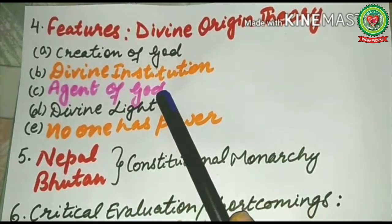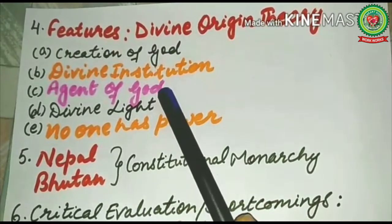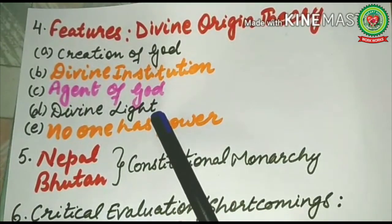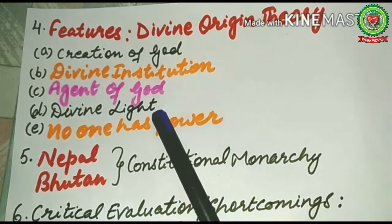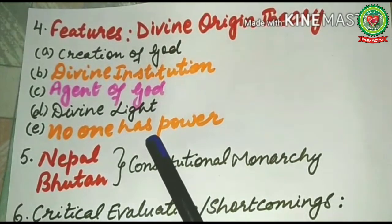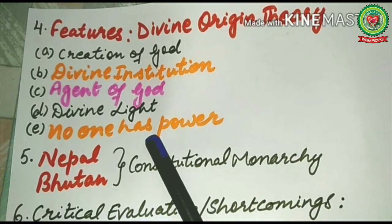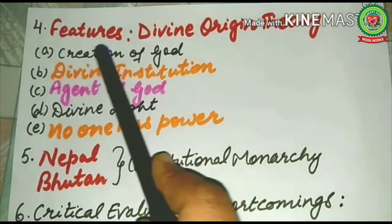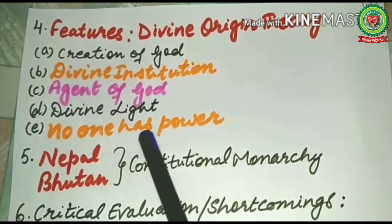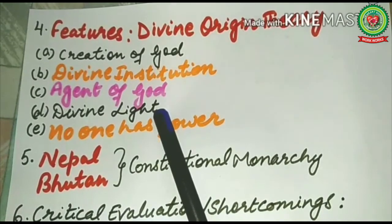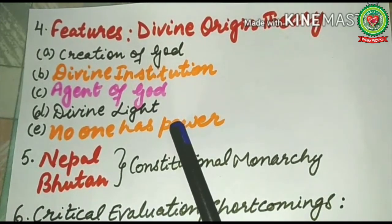The third feature is that the king is the agent of God on this earth. The fourth feature is that the king has the divine right to issue commands, and these are to be obeyed by all. The fifth feature is that no one has the power to take away the rights and powers of the king. These five features are very important regarding the divine origin theory.